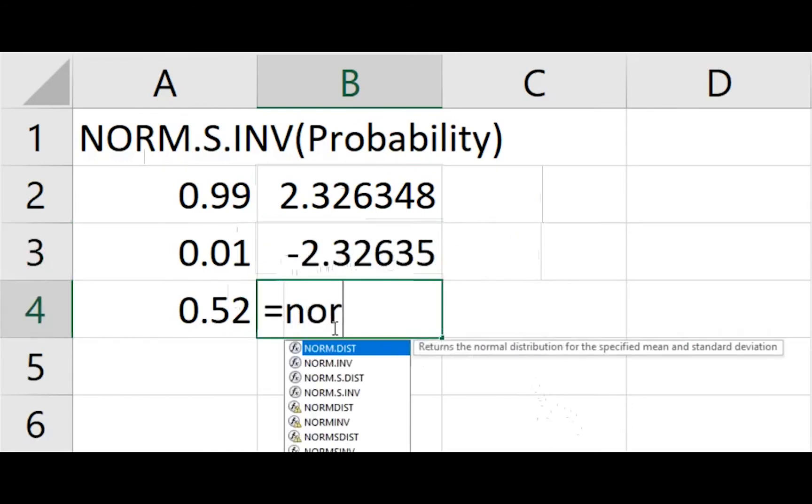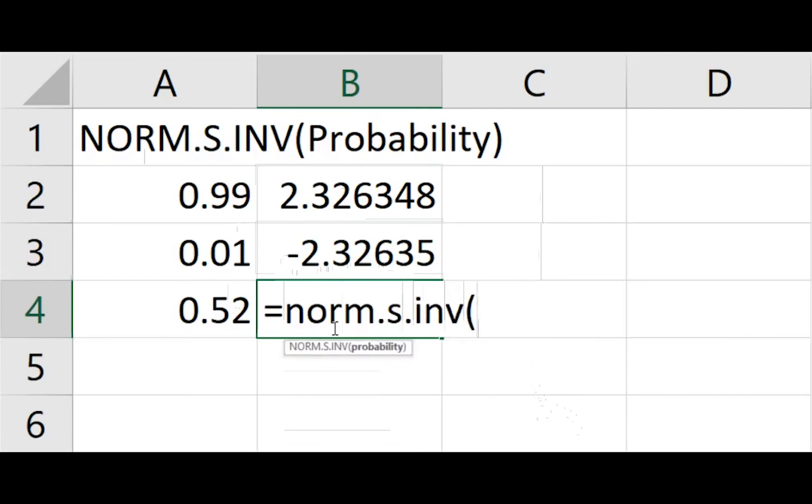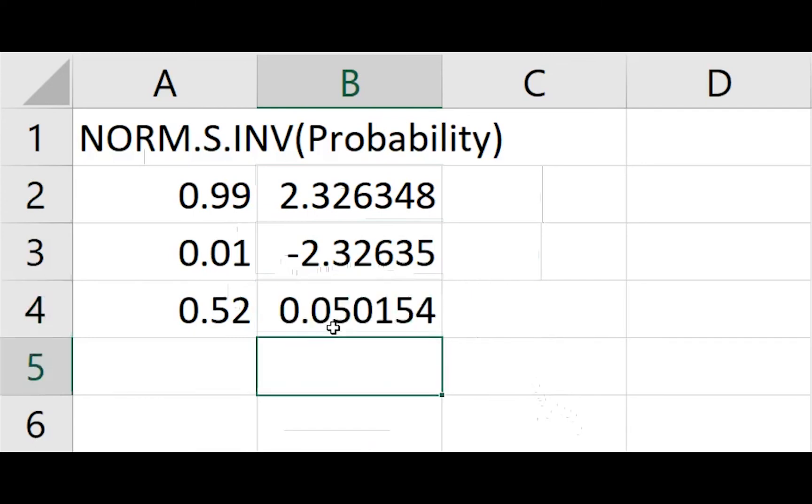One of the interesting things about this formula is that it's actually more accurate than the charts you find in the back of the book. The charts will only go to 4 decimal places, Microsoft Excel will actually go beyond that. And that's all there is to it. If you need a z value from a percentage, just use norm.s.inv.